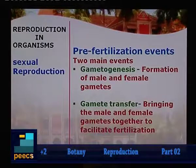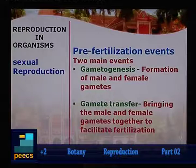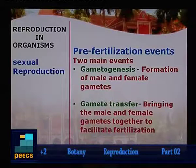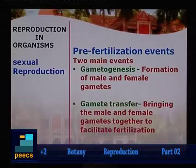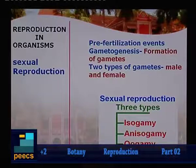During pre-fertilization changes, there are two major events. One is gametogenesis — the word itself reveals the formation of male and female gametes. Genesis means birth. The second is gametic transfer, bringing the male and female gametes together to facilitate the event called fertilization. So the two changes are: production of gametes, and transfer of gametes to aid the phenomenon of fertilization.